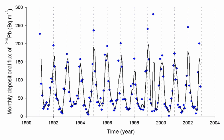As radon itself decays, it produces decay products, which are other radioactive elements called radon daughters, also known as radon progeny. Unlike the gaseous radon itself, radon daughters are solids and stick to surfaces, such as dust particles in the air. If such contaminated dust is inhaled, these particles can also cause lung cancer.